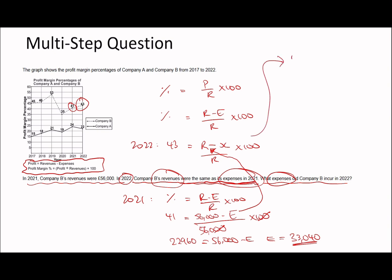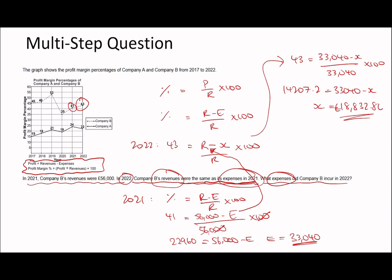Now the revenue in 2022 is 33,040. Let's set up our equation again: 43 equals 33,040 minus X divided by 33,040 times 100. Simplifying: 43 times 33,040 divided by 100 gives 14,207.2. So 14,207.2 equals 33,040 minus X. Rearranging, X equals 18,832.80 pounds. That's the expenses incurred by company B in 2022.